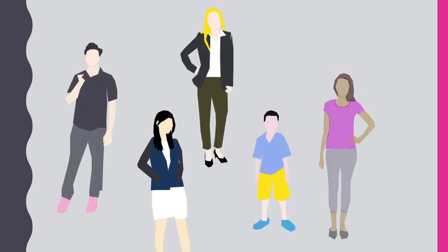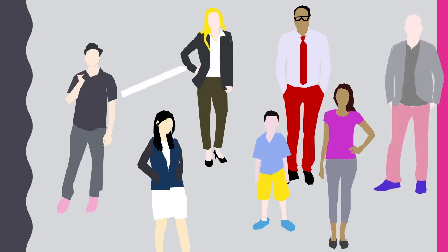However we could also represent a social network in this way, where each node represents a person, and each edge indicates the two people follow each other or are friends.